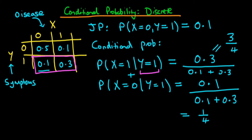What's the intuition for why the top probability is three quarters and the bottom is one quarter? We're constraining ourselves to the bottom row, so we just need to think about the ratio of one entry relative to the total probability of being in that row. Because the relative probability is three times as much for X equals one given Y equals one compared to X equals zero given Y equals one, the probability is three times as much — hence three quarters versus one quarter.